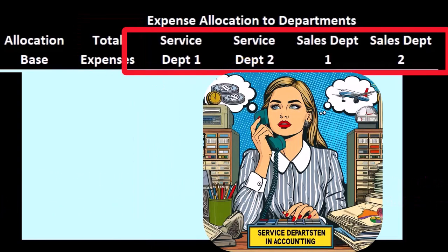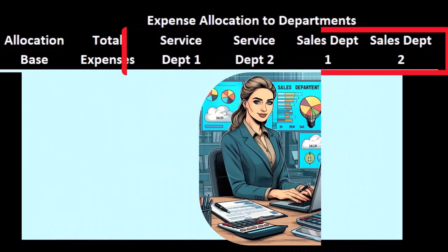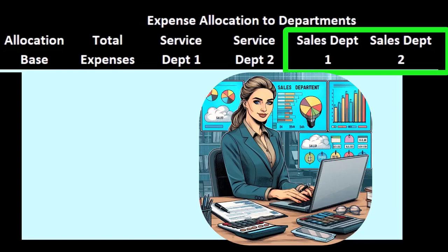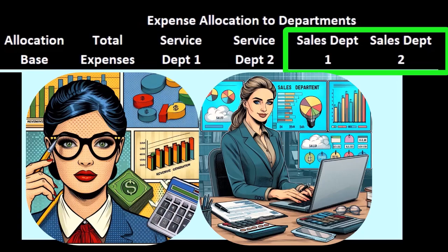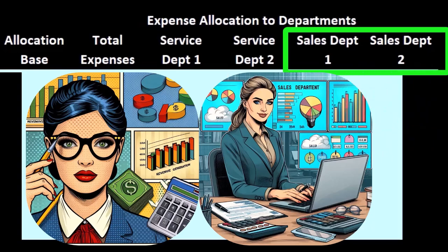We have service department one and service department two — these are non-revenue generating departments that exist to support the revenue-generating departments, since revenue is the company's goal. We will apply indirect costs as well as direct costs to the service departments, and then allocate them to the operating or sales departments. Sales department one and two are the operating departments that have both revenue and expenses associated with them.